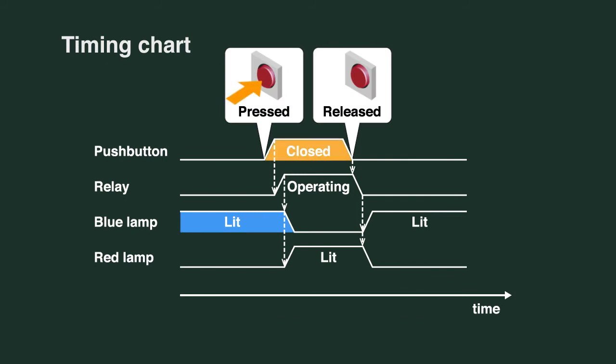When the button is pressed, the relay is actuated, the blue light turns off, and the red light turns on. When the button is released, the relay disengages, the red light turns off, and the blue light turns on again.